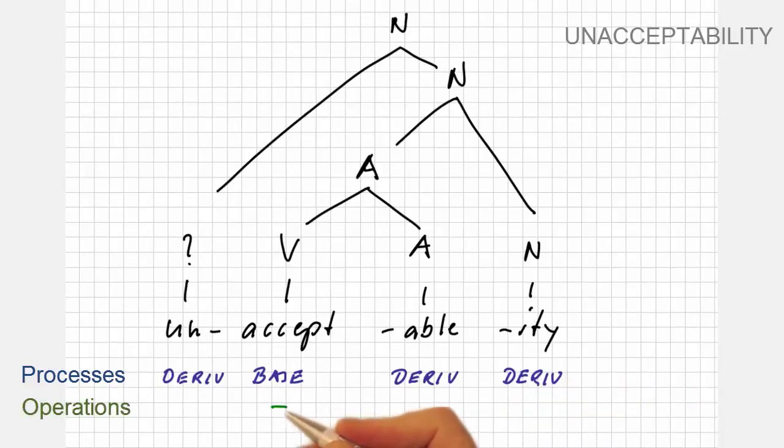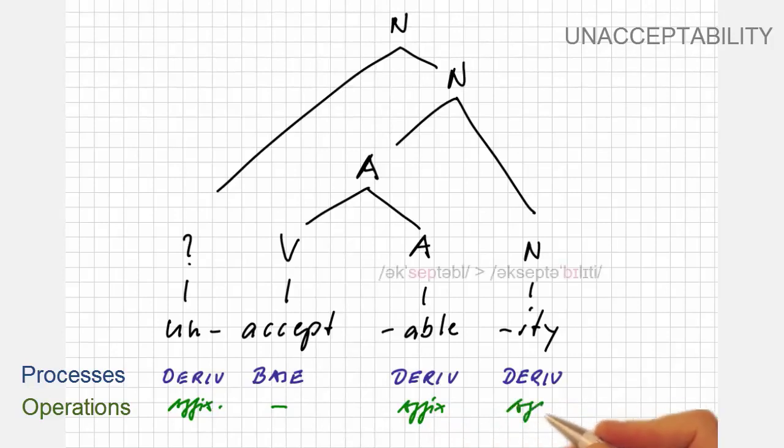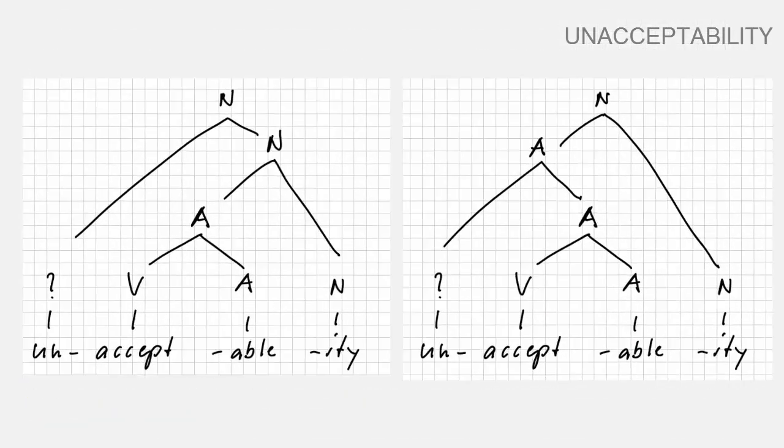And the morphological operations? Well, in all three cases, we have an operation of affixation, where the attachment of -ity involves a stress shift, a phonological change, and a special orthographical variant of -able. Here are both solutions side by side.